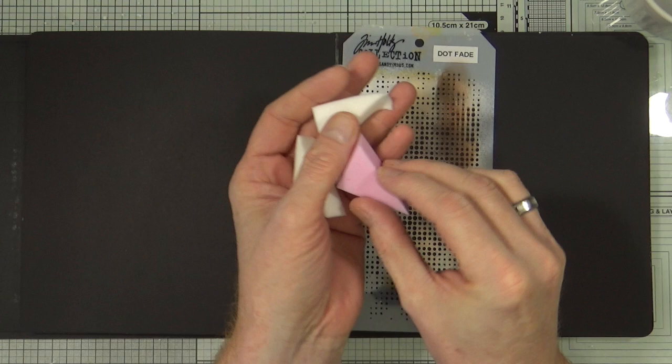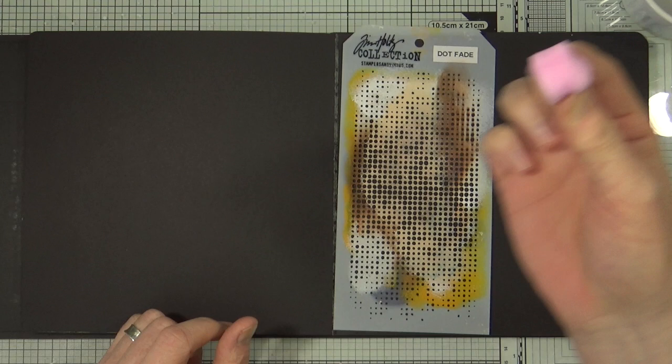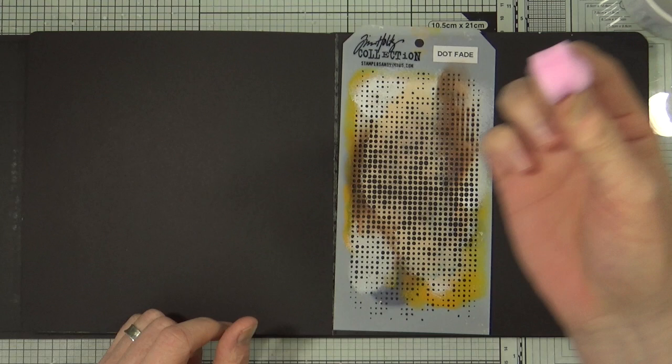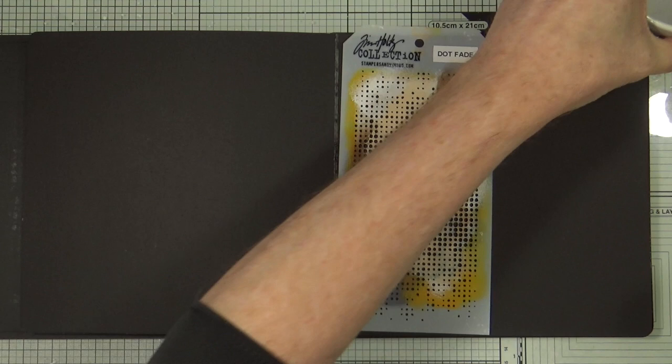I'm just going to take a cosmetic sponge, and I'm just going to soak up a little bit of that bleach into the sponge. Now I'm hoping that the bleach doesn't start to dissolve the sponge. I have a little bit, I'm just taking off the excess just so I can show you what I'm doing.